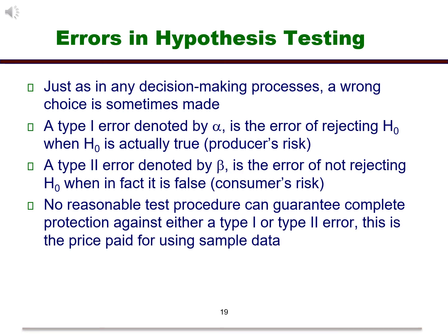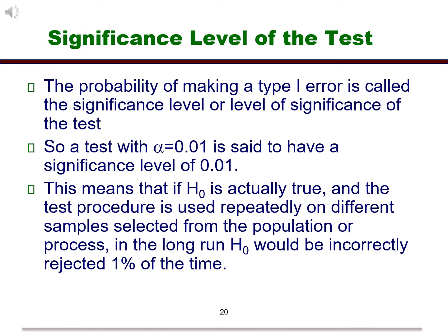No reasonable test procedure can guarantee complete protection against either a type 1 or type 2 error. This is the price we pay for using sample data. The probability of making a type 1 error is called the significance level or level of significance of the test. So a test with alpha equal to 0.01 is said to have a significance level of 0.01. This means that if the null is actually true and the test procedure is used repeatedly on different samples selected from the population or process, in the long run, the null would be incorrectly rejected 1% of the time.